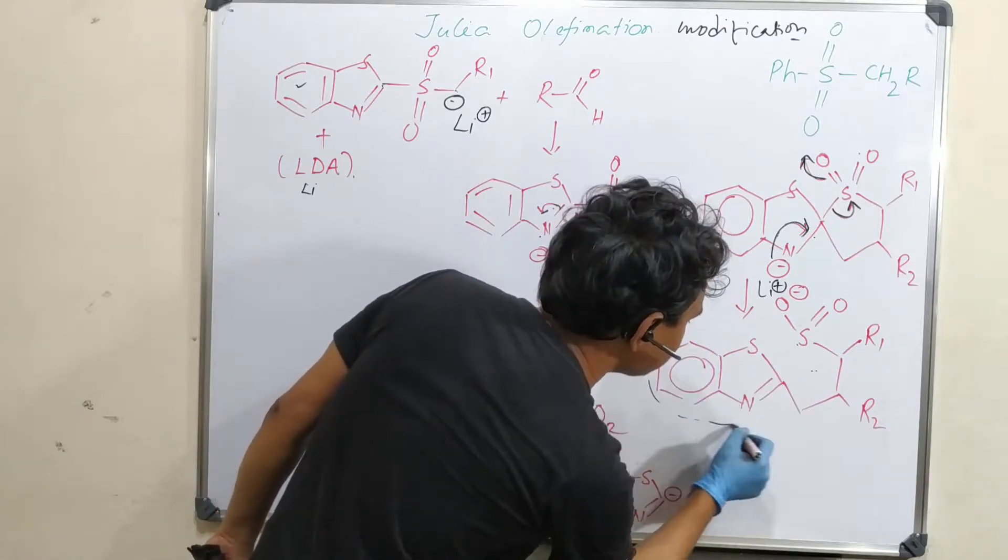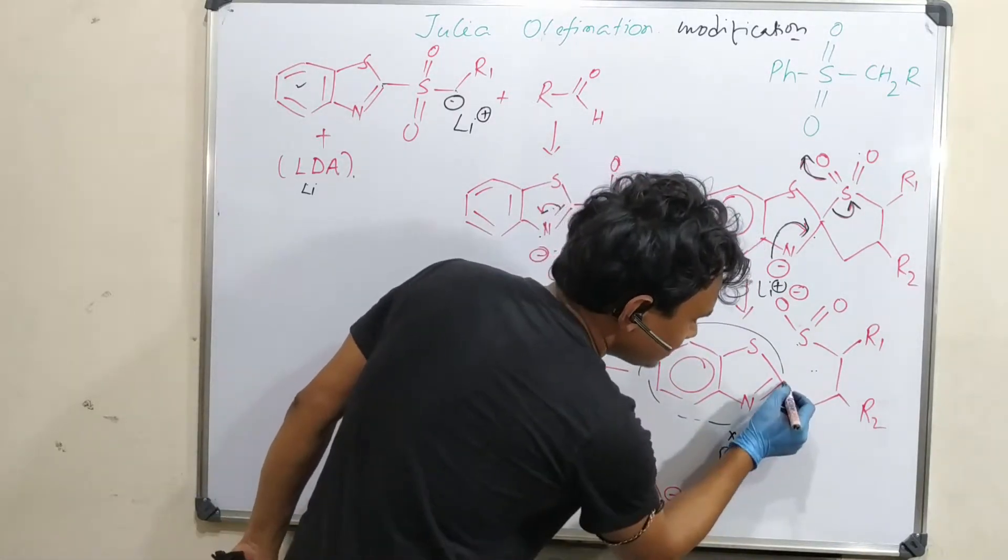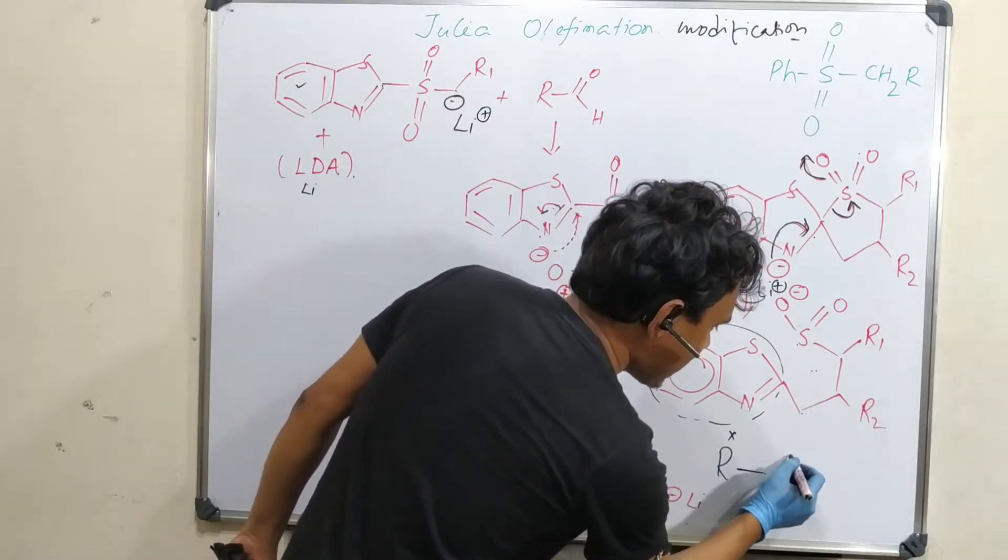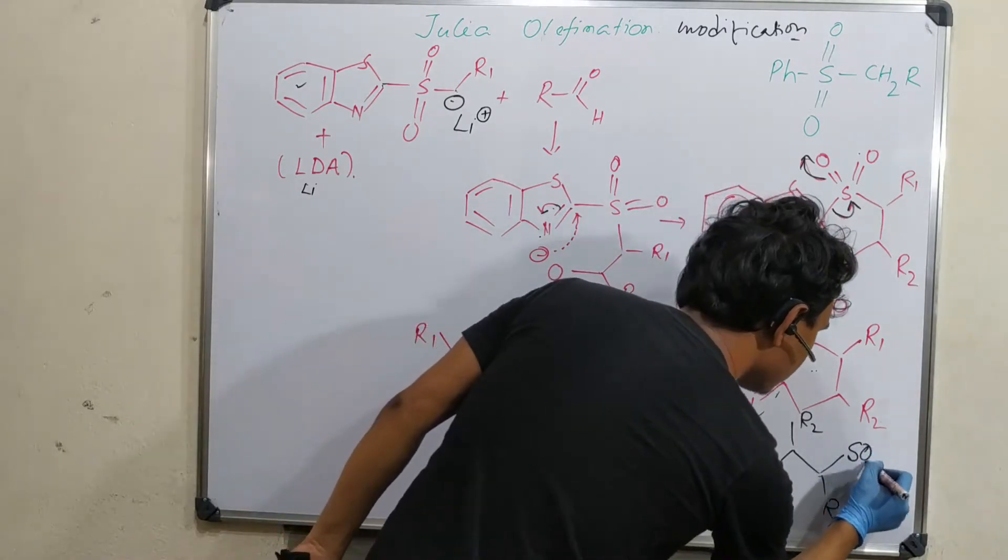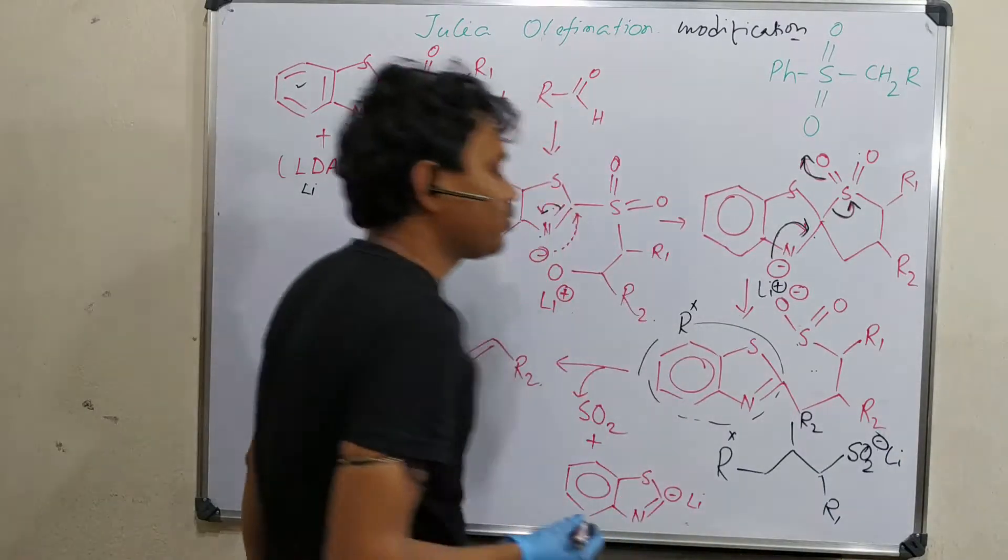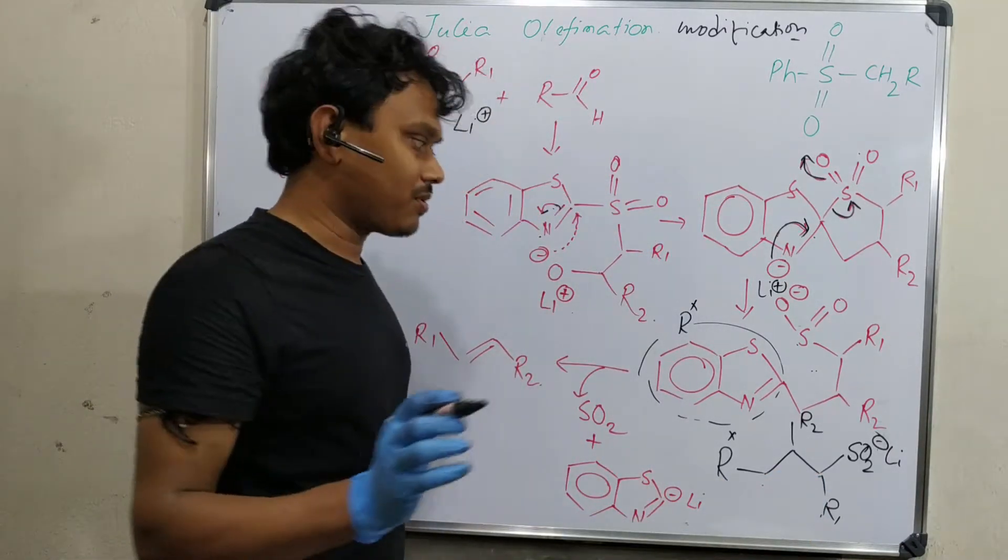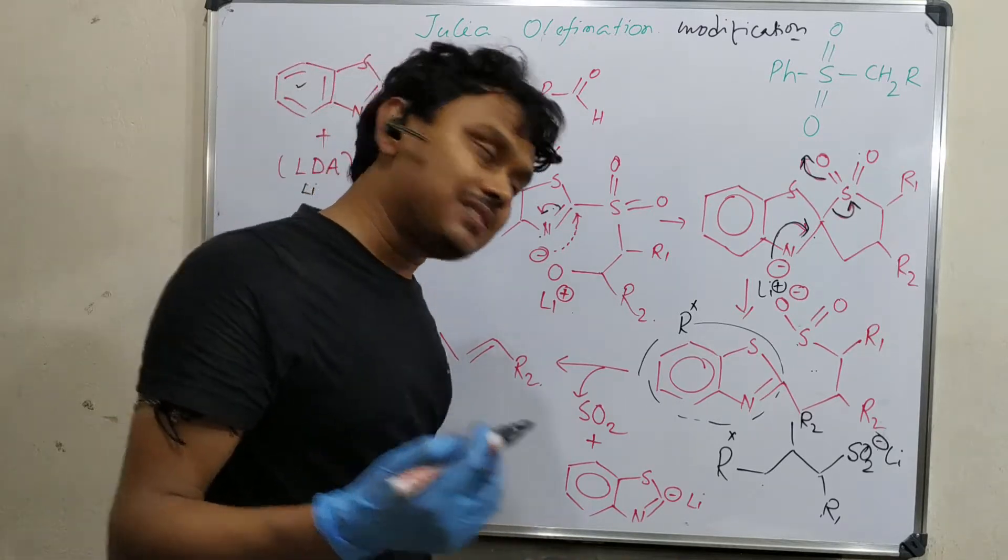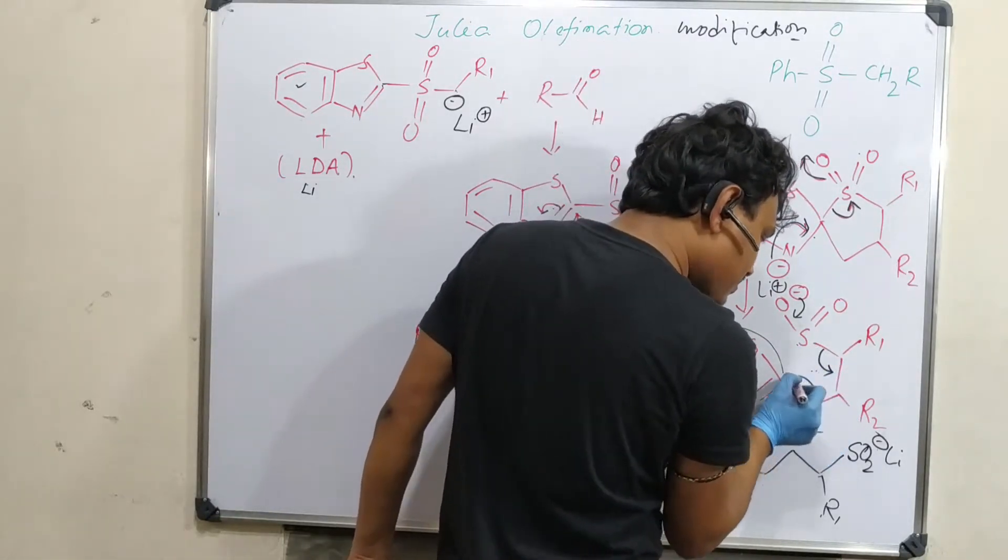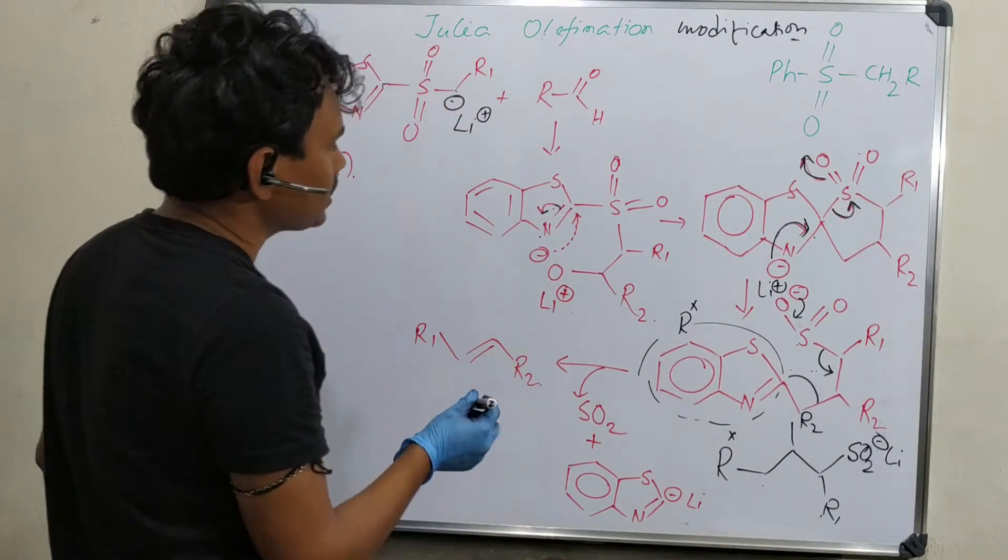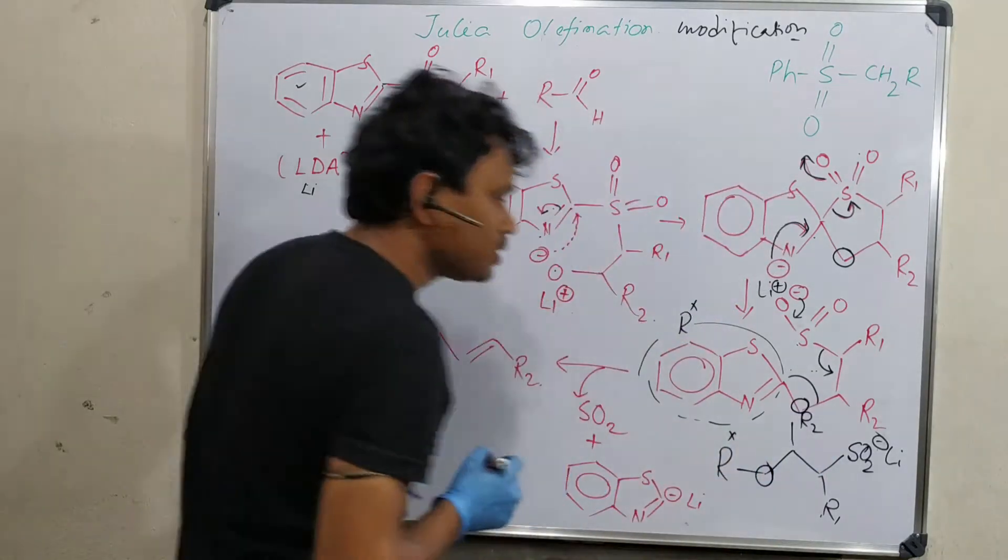We need to rewrite this thing again. Let's write this part: R-CH2-CH2, one carbon with R2, another carbon with R1, another is SO2 minus and lithium attached to oxygen. The bulkiness of these two will prefer to have the geometry of trans.